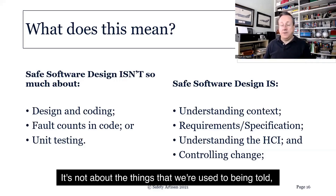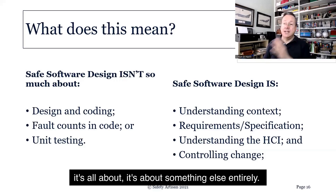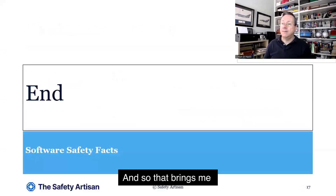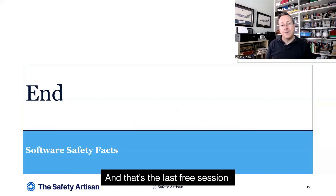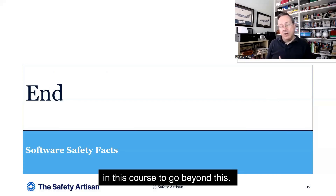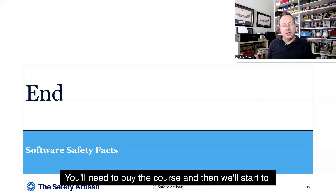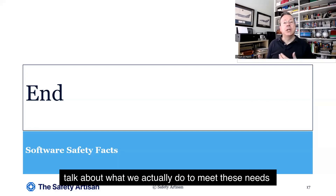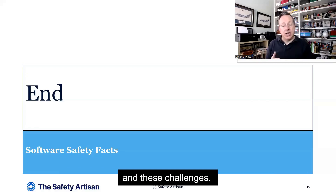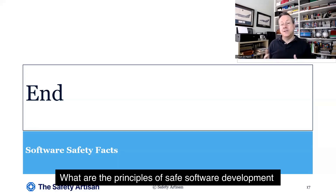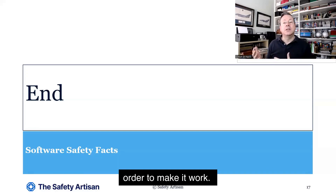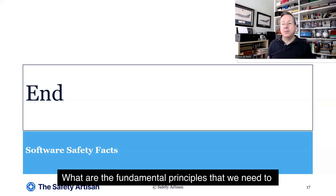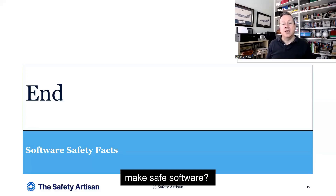That brings us to the end of this short session on software safety facts, which is the last free session in this course. To go beyond this, you'll need to buy the course. Then we'll start to talk about what we actually do to meet these needs and challenges — the principles of safe software development that we need to see in every software standard, and the fundamental principles required to make safe software.